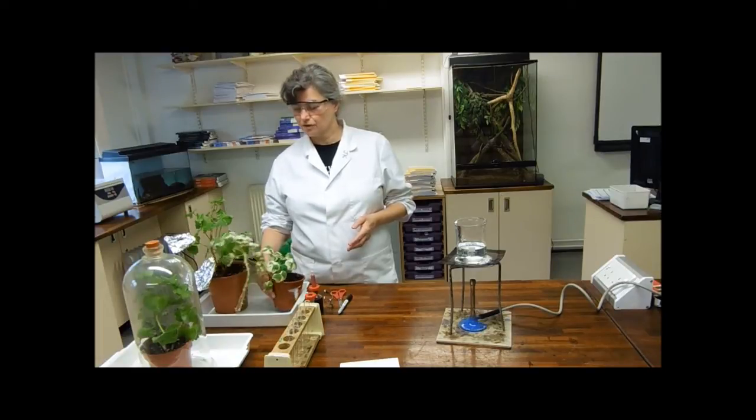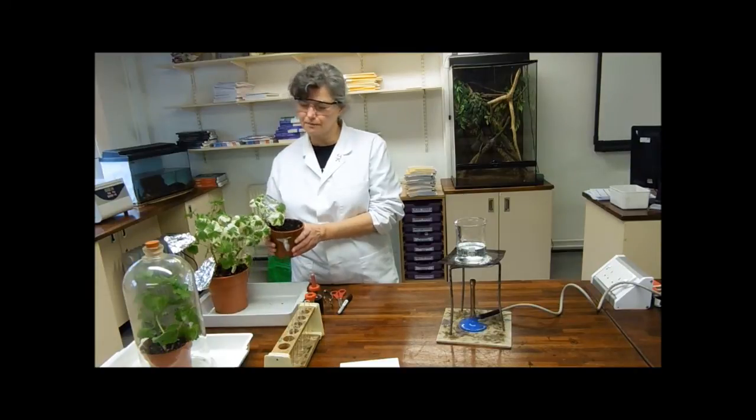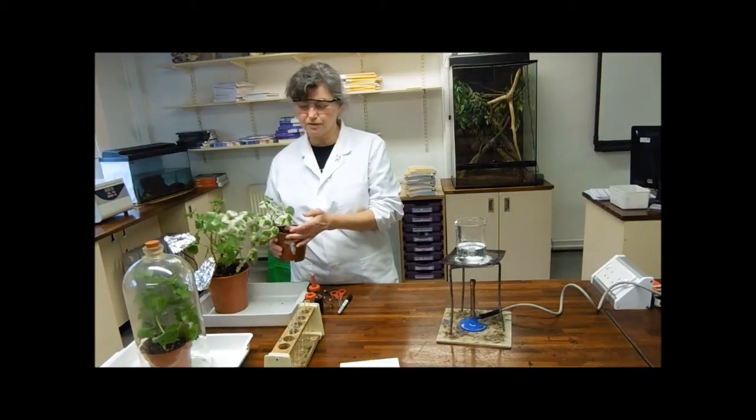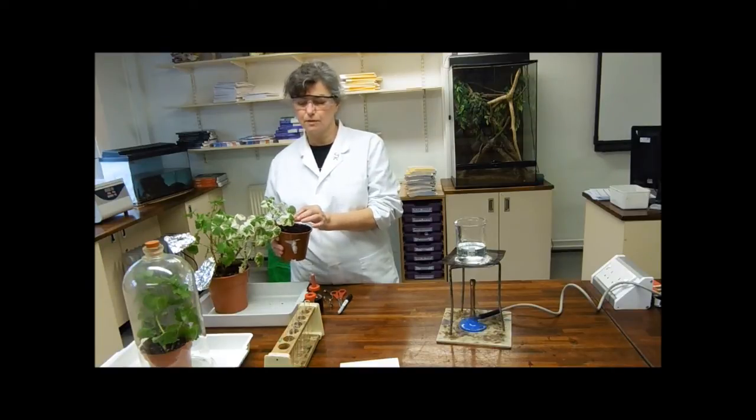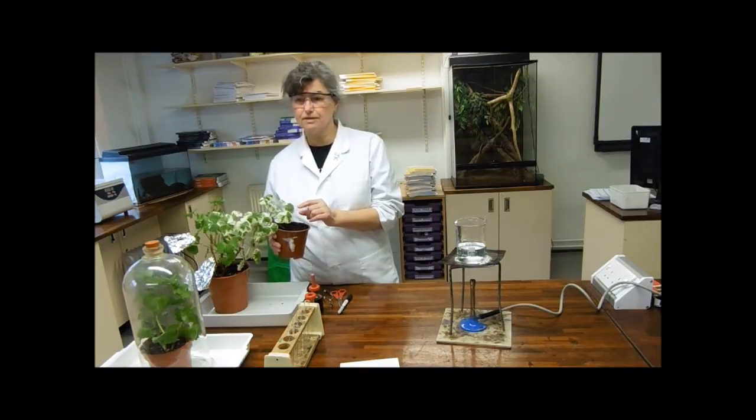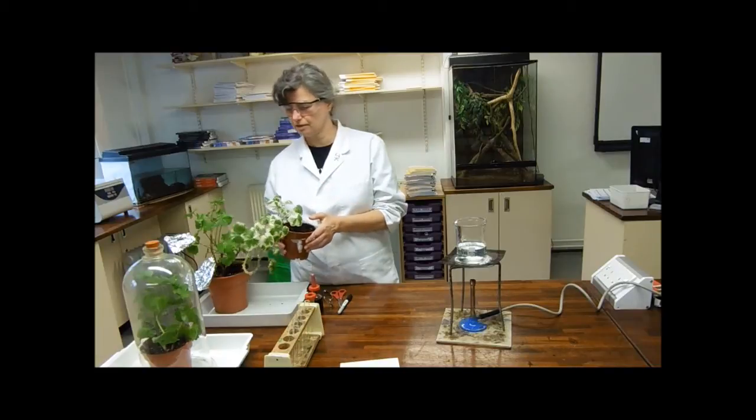I've got a variegated plant and for those who are unfamiliar with the word variegated, that means that part of the leaf is white and part of the leaf is green with chlorophyll. We're going to test to see where the photosynthesis is going on. If it's only going on where the green bit is, we know that we need chlorophyll.